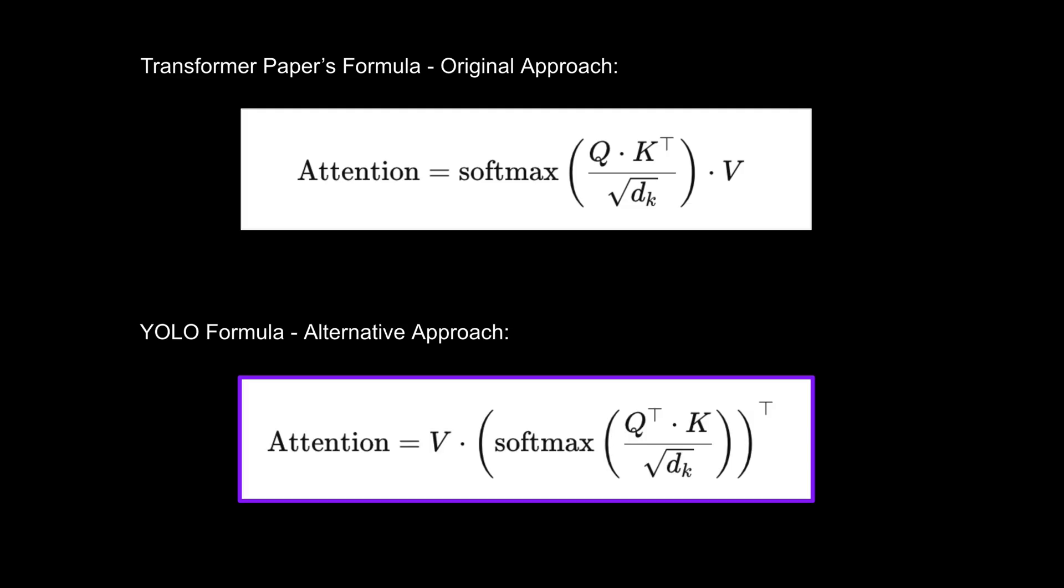However, YOLO 12, just like YOLO 11 did before it, uses a variant of the standard attention mechanism. While it retains the core principles of scaled dot product attention, it changes the order of operations. The transpose of the query is multiplied by the key first. After applying softmax, the result is transposed before being multiplied by the values. Although mathematically similar to the standard method, this variation may be optimized for vision tasks or specific requirements within the YOLO architecture, such as improving computational efficiency or simplifying implementation.